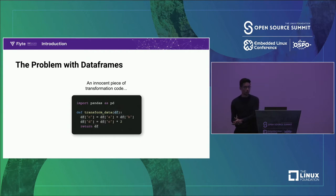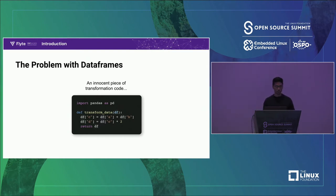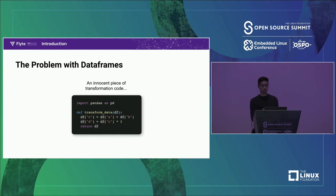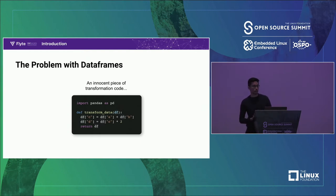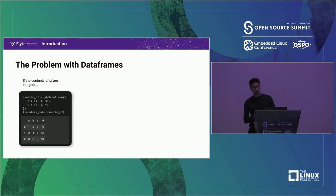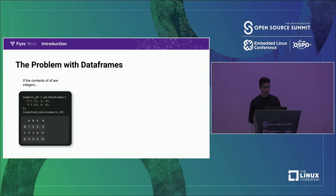Just to sketch out the problem statement — take a look at this innocent piece of transformation code. It's a function called transform_data. It takes in a poorly named argument df (data frame), and in Python anything can be anything. Here we're assuming df is a data frame. The transformation is super simple: you're assigning column C to the sum of A and B, doubling C to give you D, and then returning the data frame. The contents are integers, and add and multiply operations are defined, so we get the expected output.